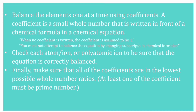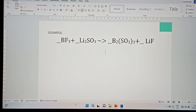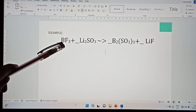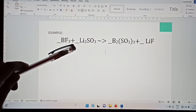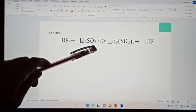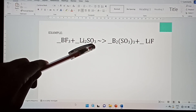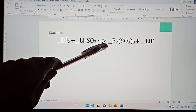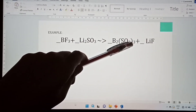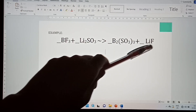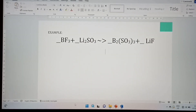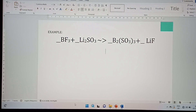Let's try to balance the chemical equation. We have here an example: boron trifluoride (BF₃) combined with lithium sulfide (Li₂SO₃) — this is a polyatomic ion — will yield boron sulfide (B₂(SO₃)₃) plus lithium fluoride (LiF).